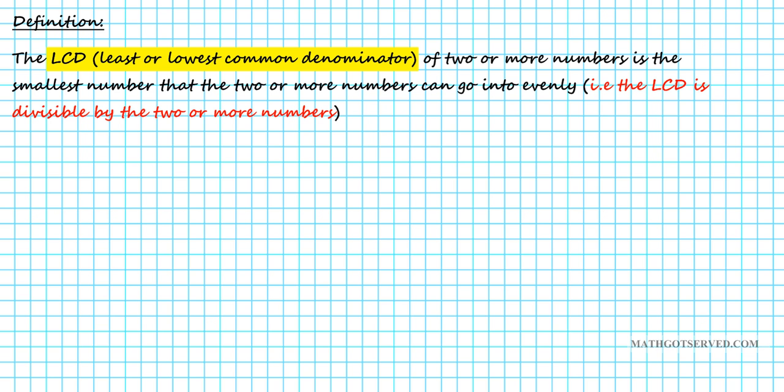So the definition of LCD of two or more numbers is the smallest number that two or more numbers can go into evenly. Two or more numbers going into the LCD evenly basically means that the LCD is divisible by the two or more numbers. So the LCD is divisible by those numbers, that means when you divide the LCD by those numbers you do not have a remainder. That's what it means to go into evenly or to be divisible by.